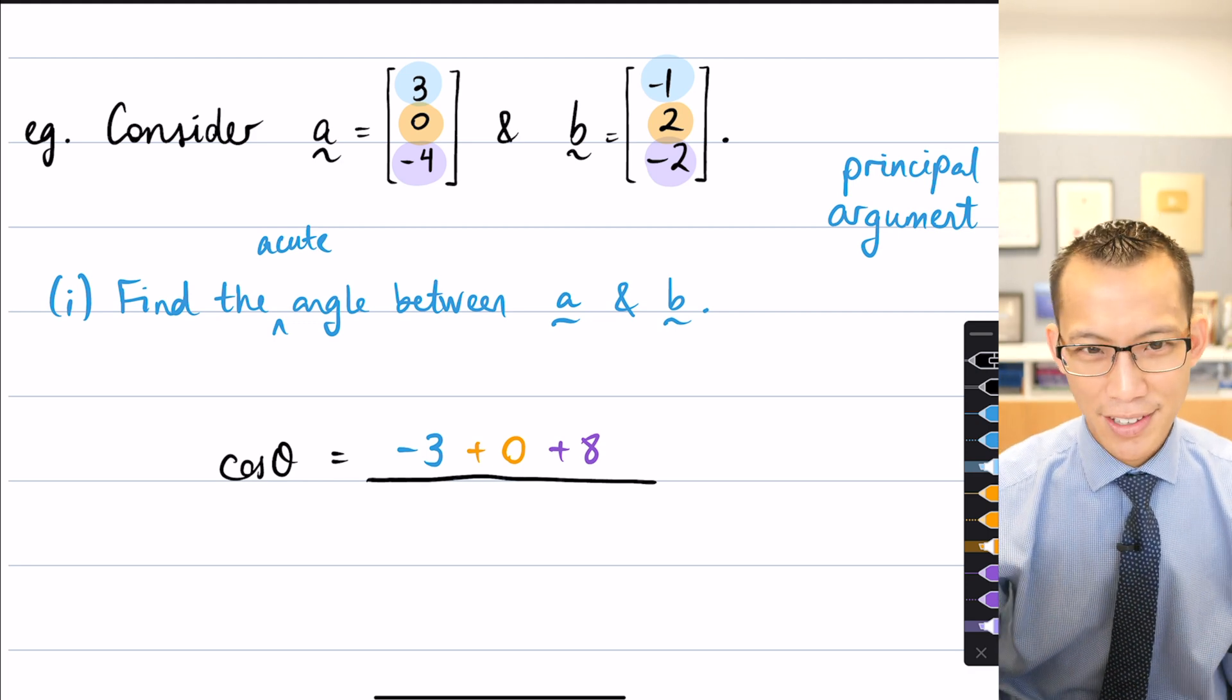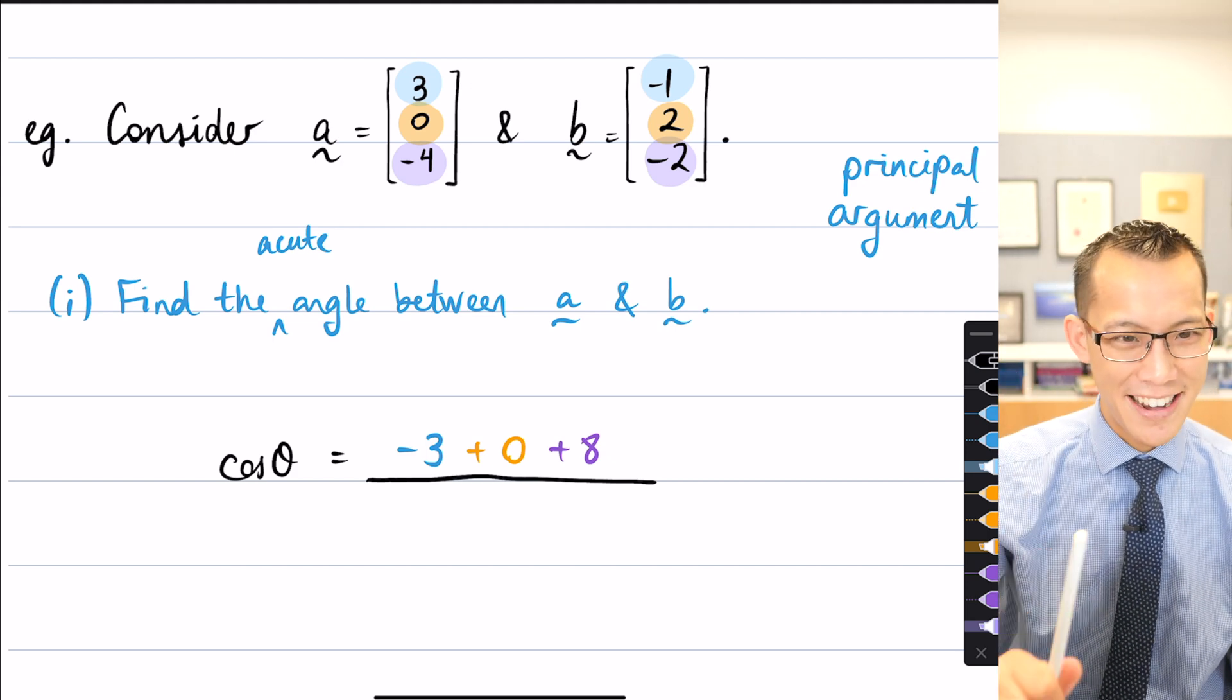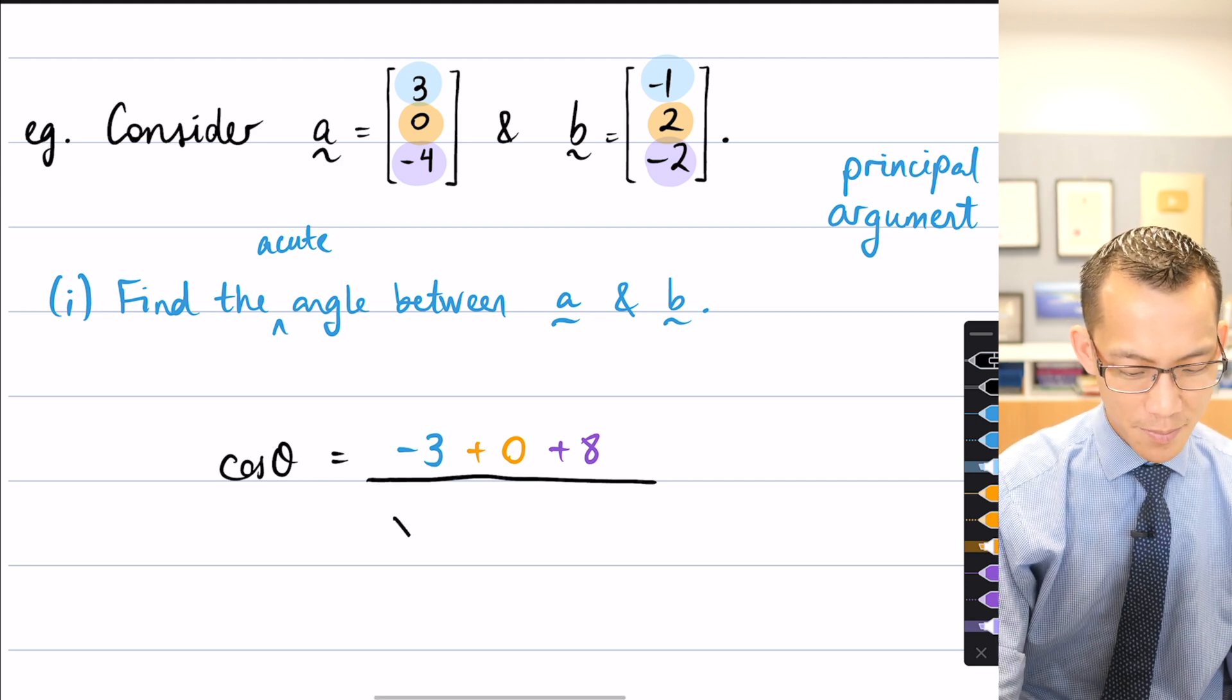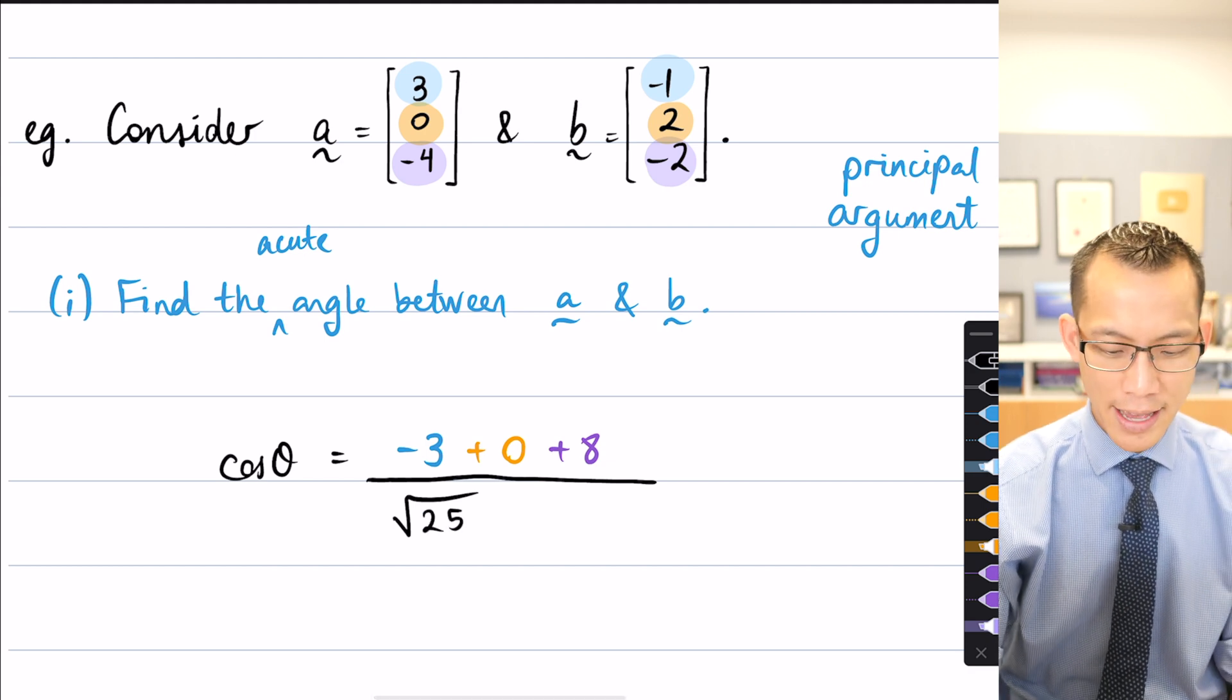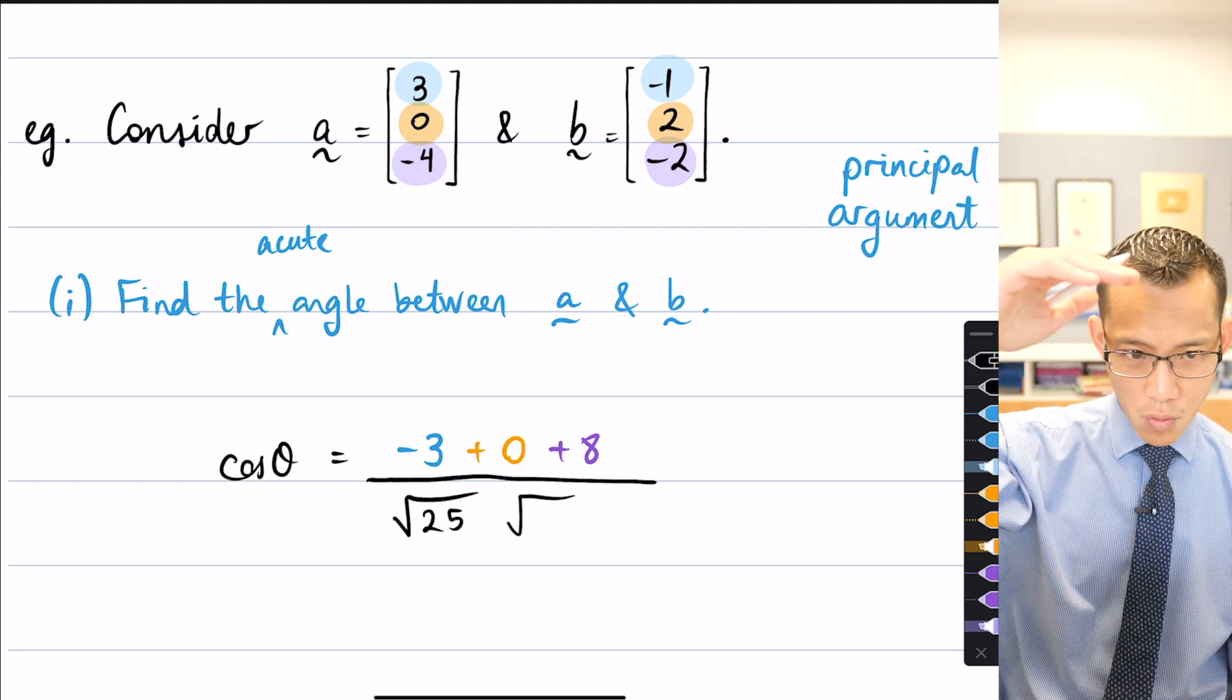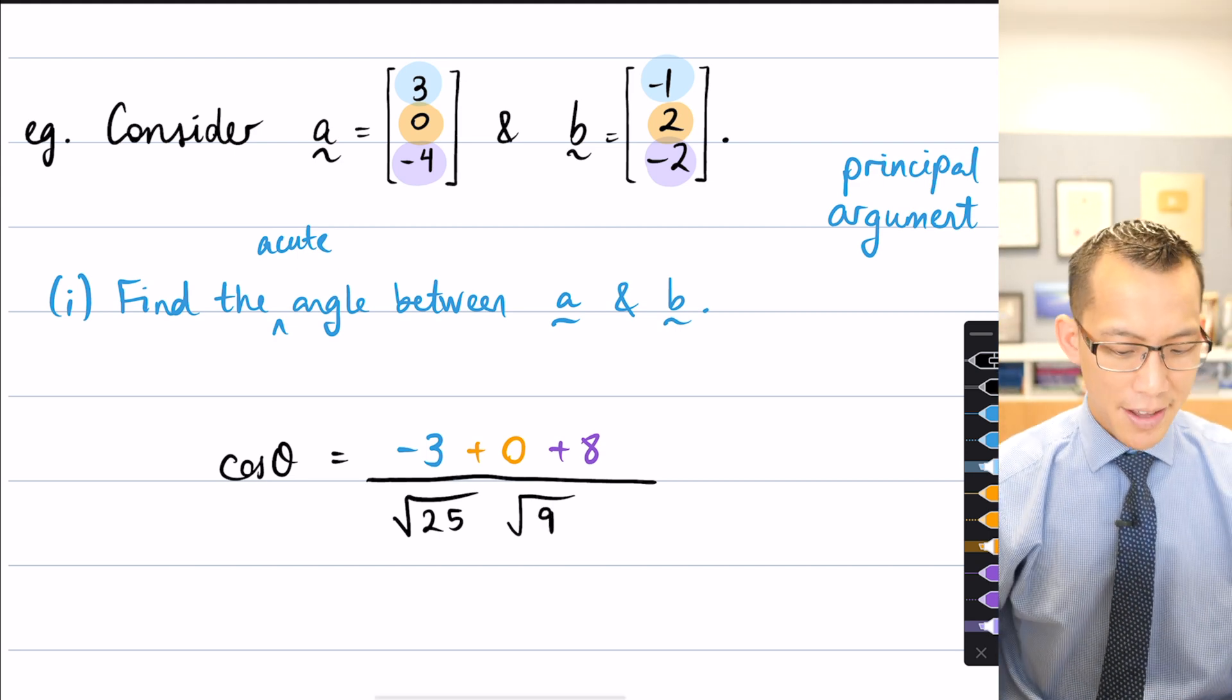And then on the denominator, I now independently need to work out each of the magnitudes. Now, have a look carefully, because I didn't choose these numbers by accident. You've got 3, 0, negative 4. When I square to do Pythagoras, what am I going to get? The square root of what? 5. Yep, so 25, which gives you 5. So there's the 16 and the 9 combining there. And then if you have a look at the b vector, when you square, you're going to get 1, 4, and 4. So yeah, that gives you 9.